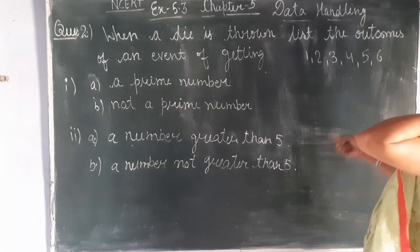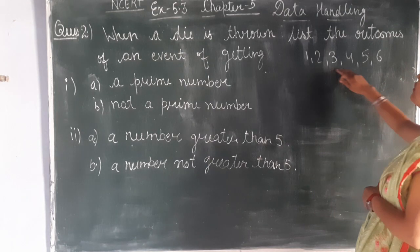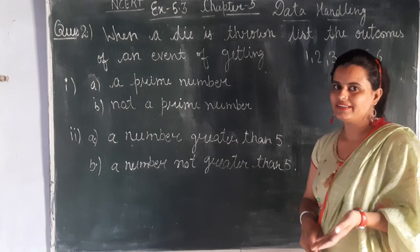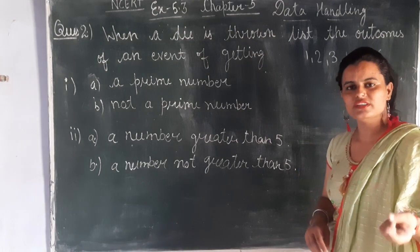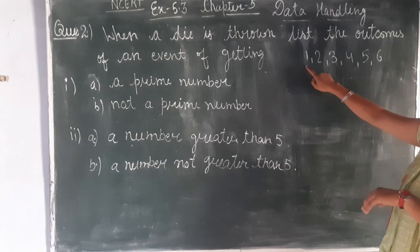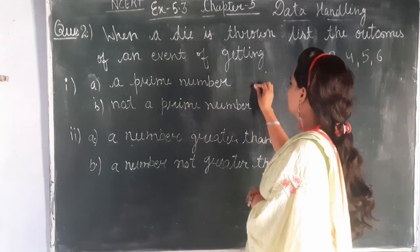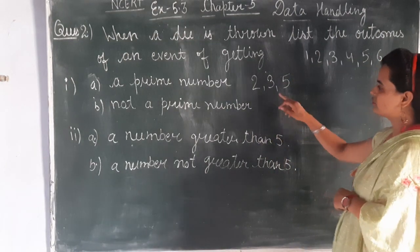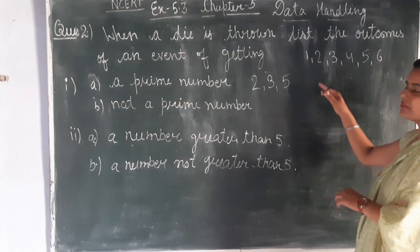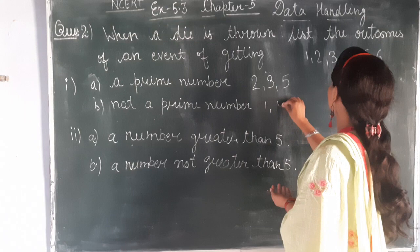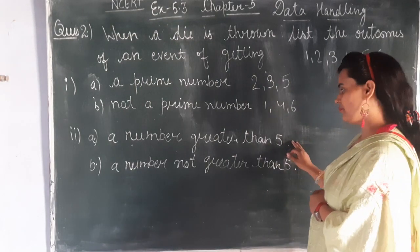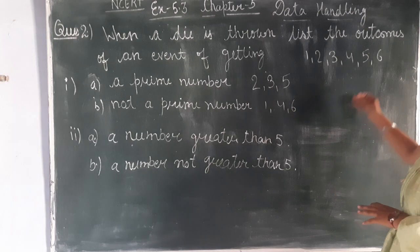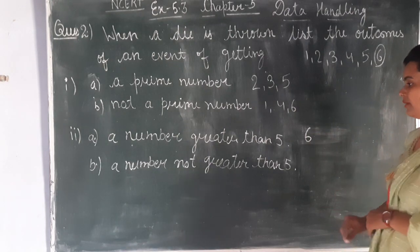The first part says: when you throw a die, tell the outcomes that are prime numbers. Prime numbers are those which have factors only one and itself. So from one to six, the prime numbers are two, three, and five — these are the prime numbers, so the outcomes are two, three, and five. The numbers that are not prime are one, four, and six. Now the second part: a number greater than five — only six is greater than five, so the outcome is six.